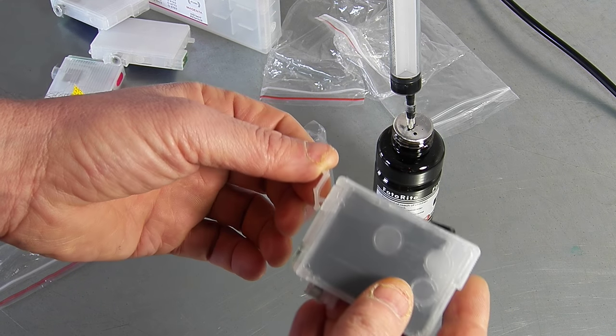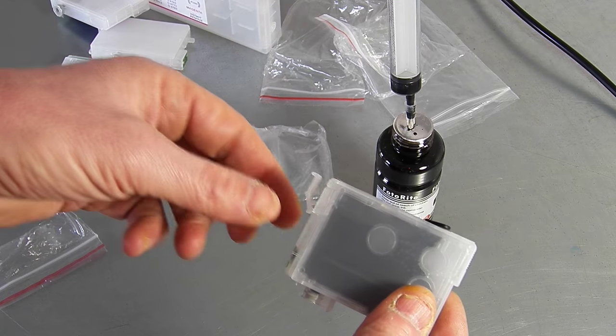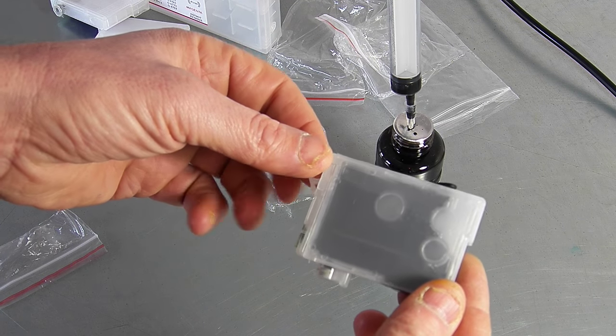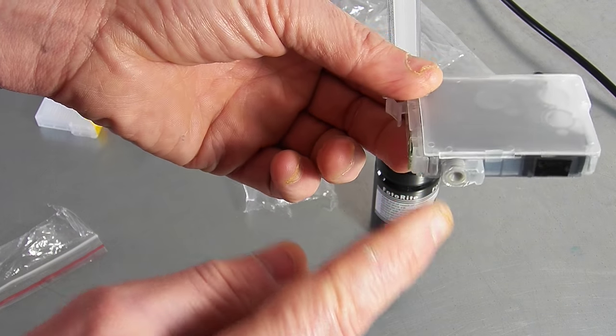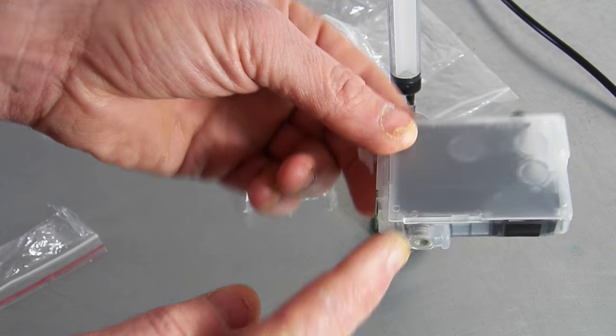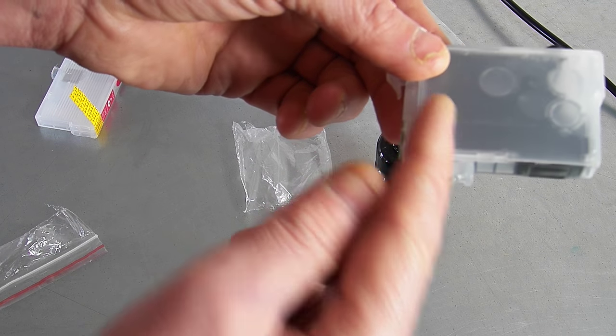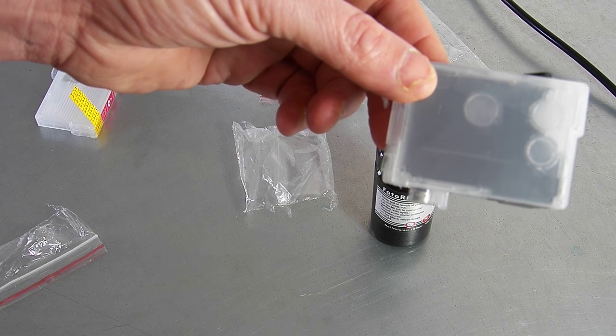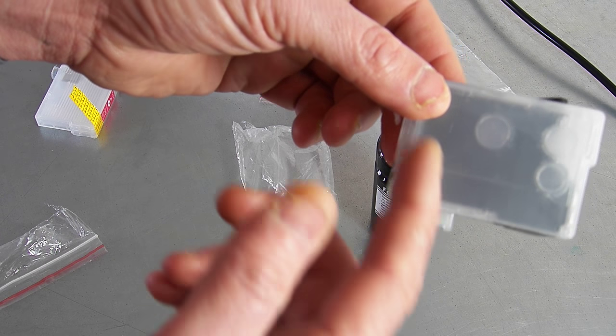For future refills, we do recommend that you take them out of the printer when you fill them and just pop them on a piece of tissue. And the reason that we recommend that is that when you pop it in the printer, it's got an internal spring valve inside here. So when you pop it in, the little valve comes up and it opens it so that the ink can flow. Now, if you refill it while it's in the printer, the valve is open.